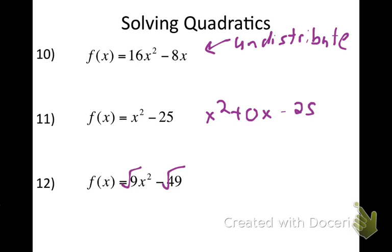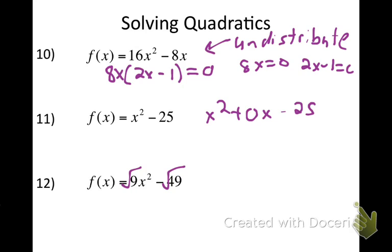Number 10: they both have 8x in common, so I pull the 8x out. Undistributing is dividing, so I get 8x times (2x minus 1). I need that 1 — think of 8 divided by 8 equals 1. Setting each equal to zero: 8x equals zero gives x equals zero; 2x minus 1 equals zero gives x equals 1/2. My two answers are 0 and 1/2.